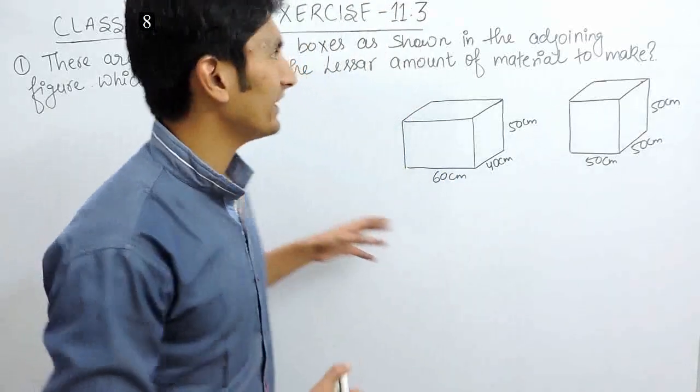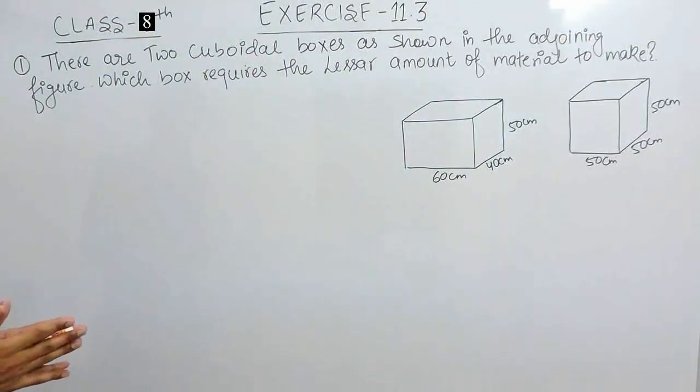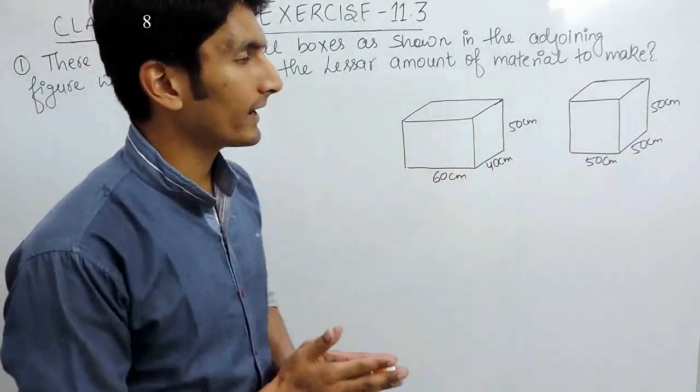Hello everyone. In this video, we are going to solve question number first of exercise 11.3. The question says, there are two cuboidal boxes as shown in the adjoining figure. Which box requires the lesser amount of material to make?